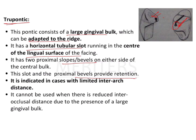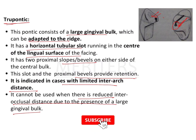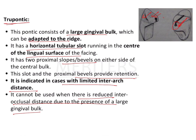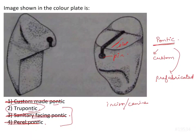The slot and proximal bevel provide retention. It is indicated in cases with limited inter-arch distance, but cannot be used when there is reduced inter-occlusal distance due to the presence of a large gingival bulk — if there is too much soft tissue, this pontic design is contraindicated. Coming back to the question, this image is an image of a true pontic.